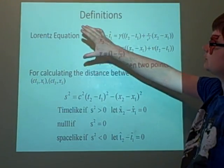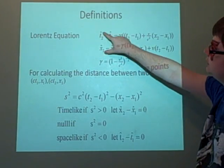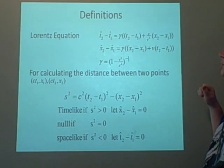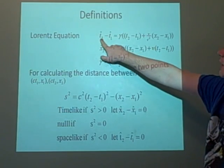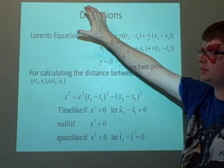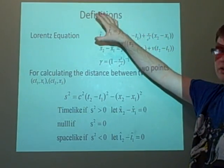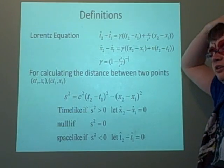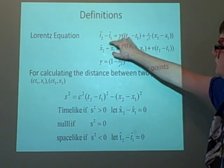First off, the Lorentz equations. These are for relating two frames to each other. If we have one frame f, which has t and x, and another frame f-hat, which has t-hat and x-hat, we can relate them like this.